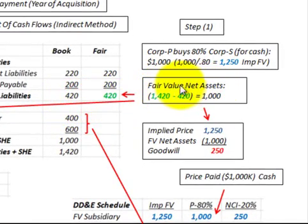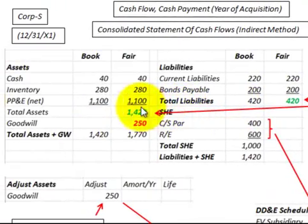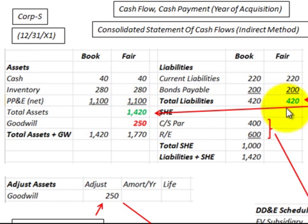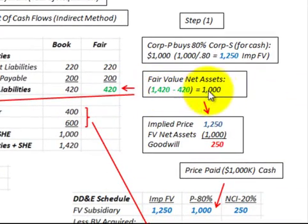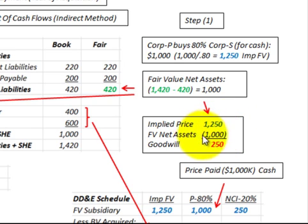We have to determine the fair value of our net assets. We take the fair value of the total net assets of $1,420,000, less the fair value of the total liabilities of $420,000, which gives us a fair value of net assets of $1,000,000. The implied price of $1,250,000 less the fair value of net assets of $1,000,000 gives us goodwill of $250,000.